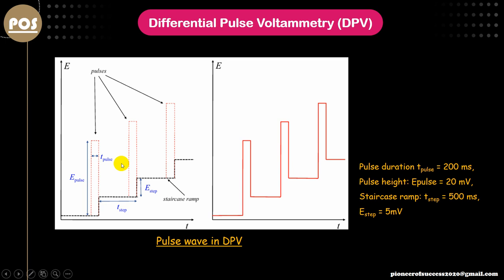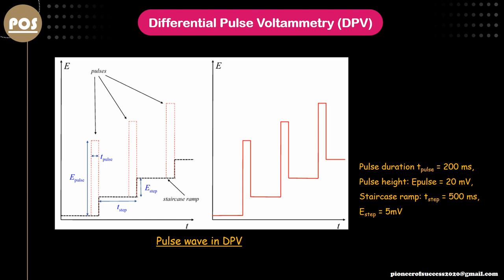What is happening is: we have a staircase function, then we apply a pulse and hold it for a time t_pulse, measuring what happens on the electrode during that time. Pulses come in successive cycles — pulse one, pulse two — on top of the staircase steps. The resultant potential waveform is a staircase with pulses superimposed. This potential is applied on the working electrode and the current measured at the counter electrode gives the DPV response.